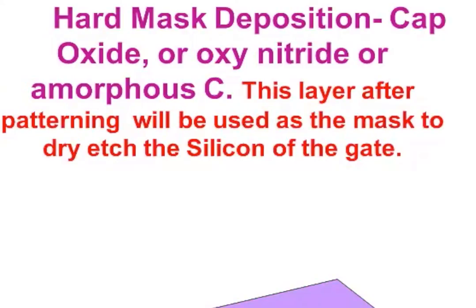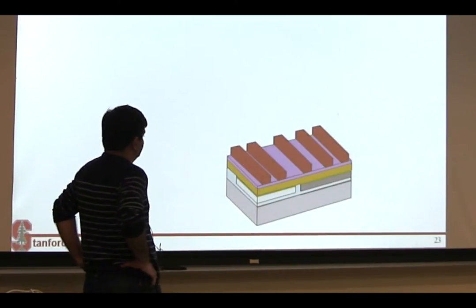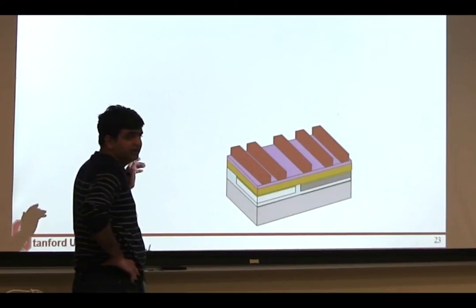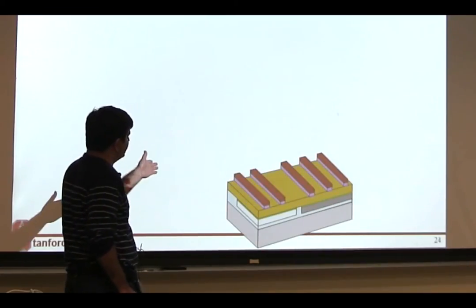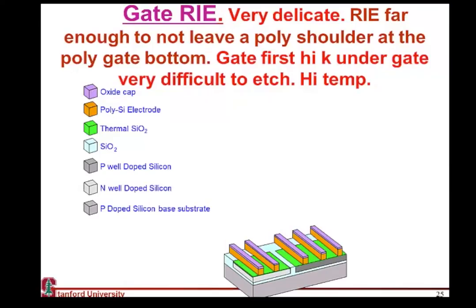Before you etch it, you need to make a hard mask. Some people prefer to use just carbon as a hard mask because they can very easily ash it off. But you put a hard mask, you put a resist, and you pattern that resist into the gate lines you want to form. You transfer that pattern from your resist into your hard mask, and then you etch that pattern into your polysilicon.